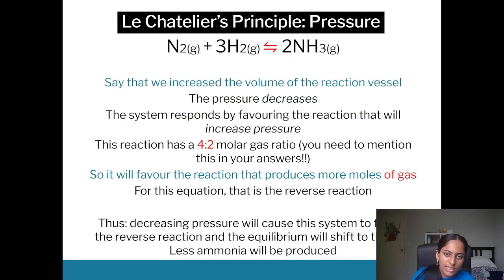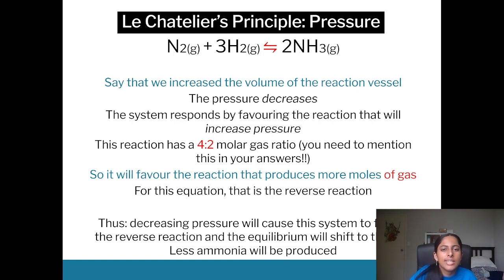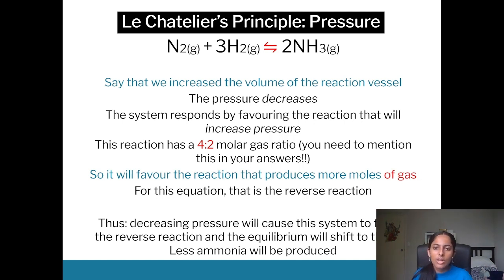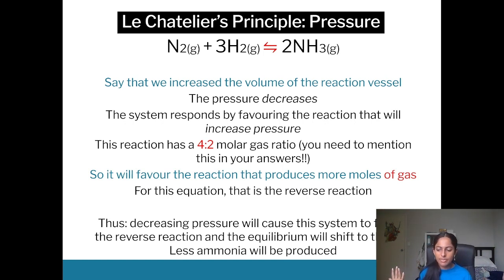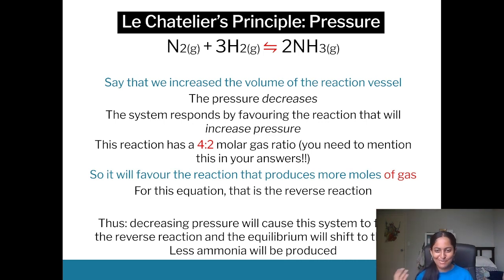There are two ways to describe change in LCP questions: shifting or favoring either side. I've lost marks by saying 'it favors the forward reaction' instead of 'it shifts right,' so make sure you include the shift phrasing in your answers. For temperature through collision theory: if you increase temperature in an endothermic equilibrium, you increase both forward and reverse reaction rates because temperature is the average measure of kinetic energy, increasing collisions. However, temperature has a greater effect where activation energy is higher, so the endothermic reaction is favored.